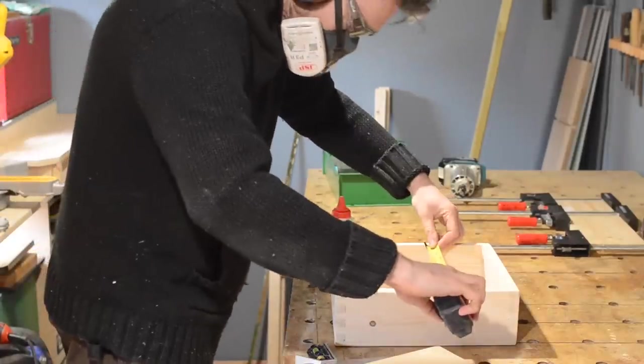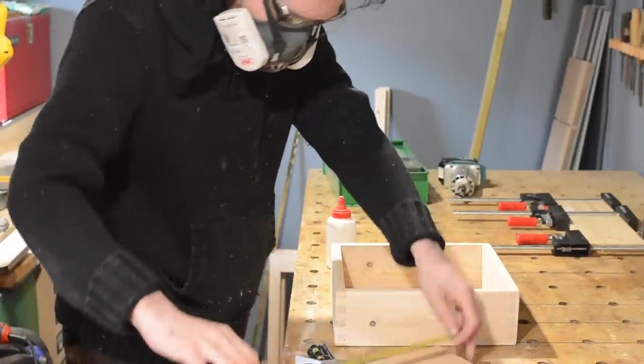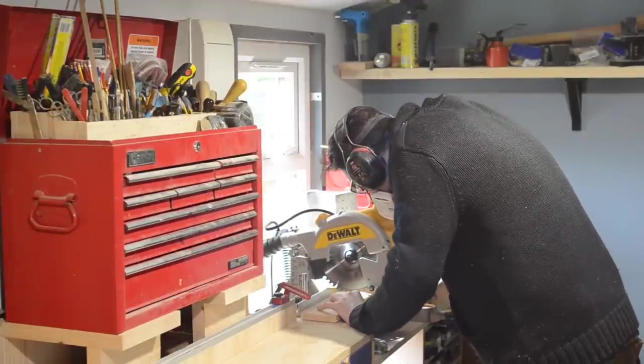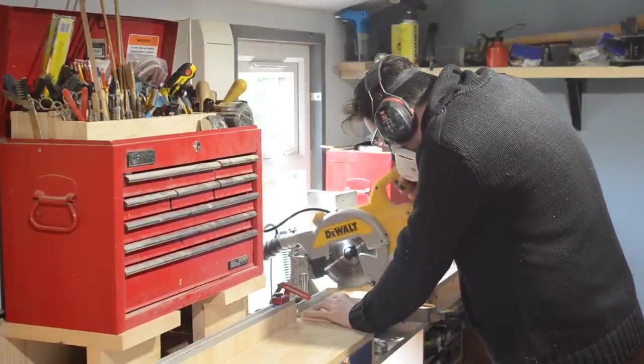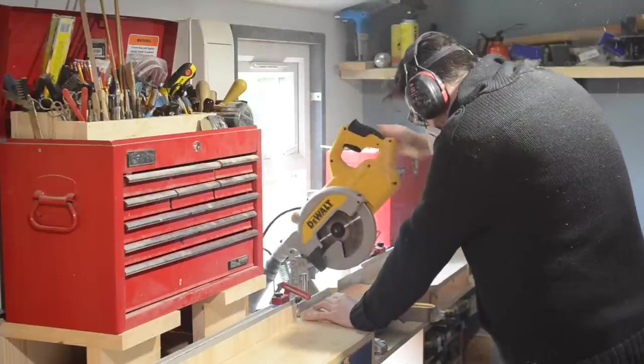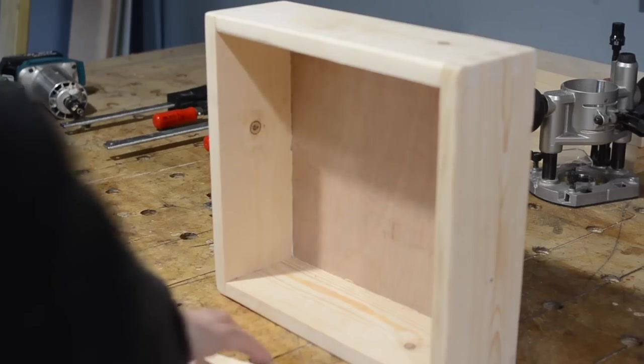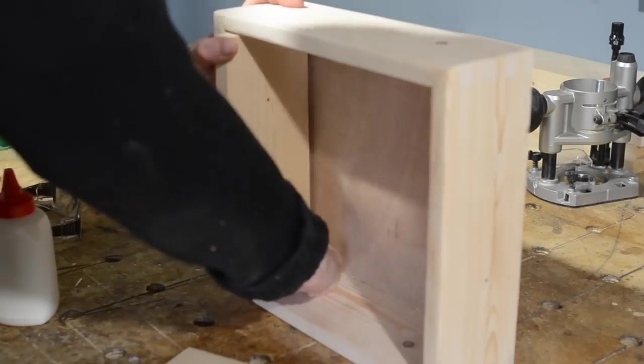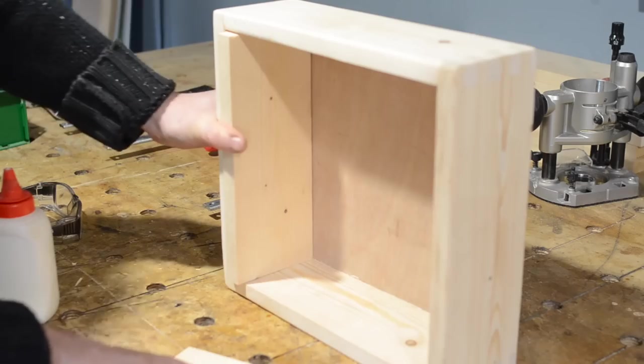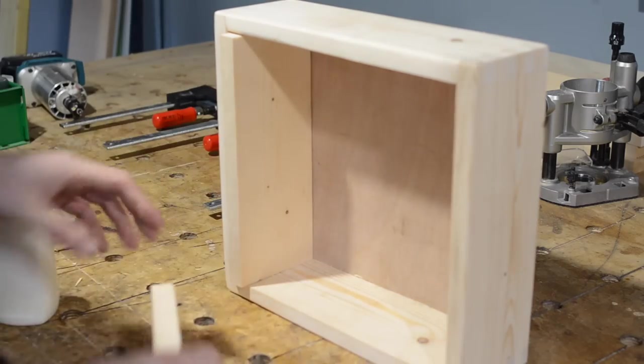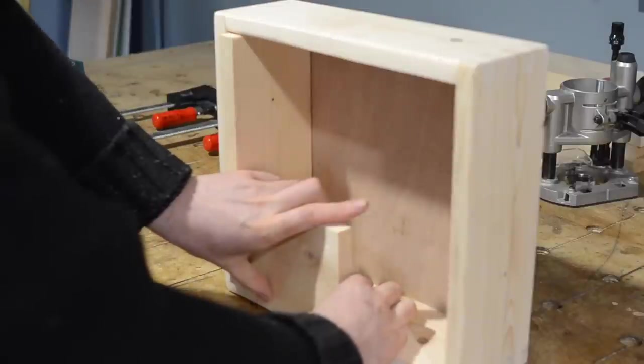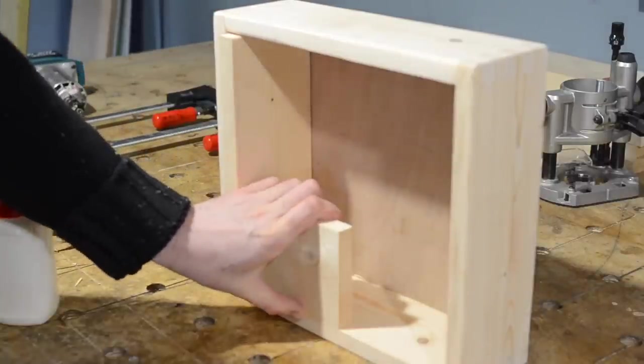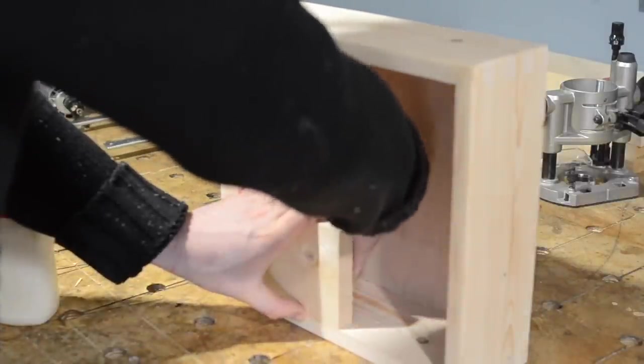This cabinet needs some internal shelves and dividers, so I can measure the internal dimensions and cut some bits of wood to length. These can be slid in, but now the back's in they're too wide. Also I want the door to fit into the cabinet, so I get a scrap of wood to represent the door and then I can mark a line on that internal shelf to see how wide it needs to be.